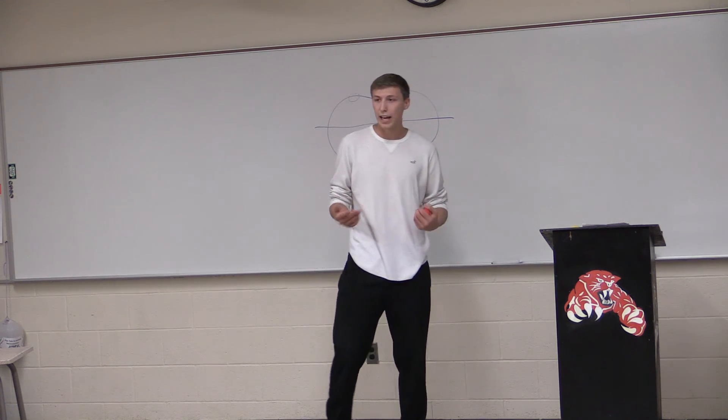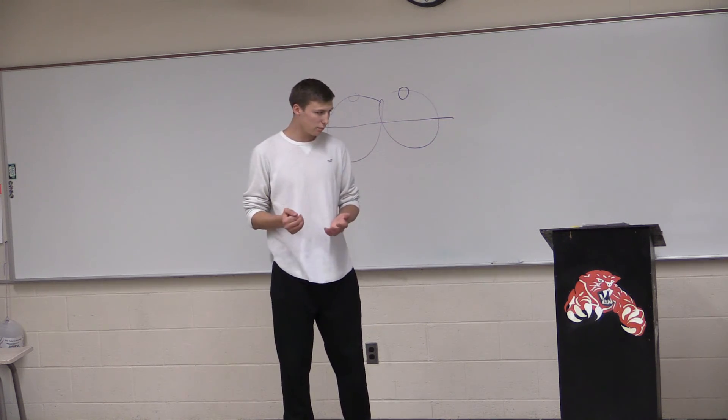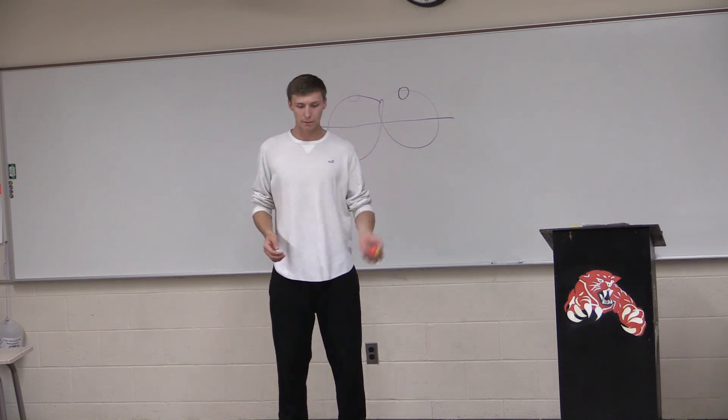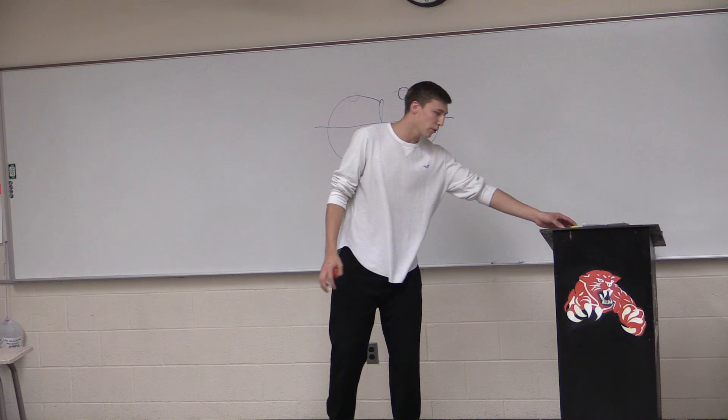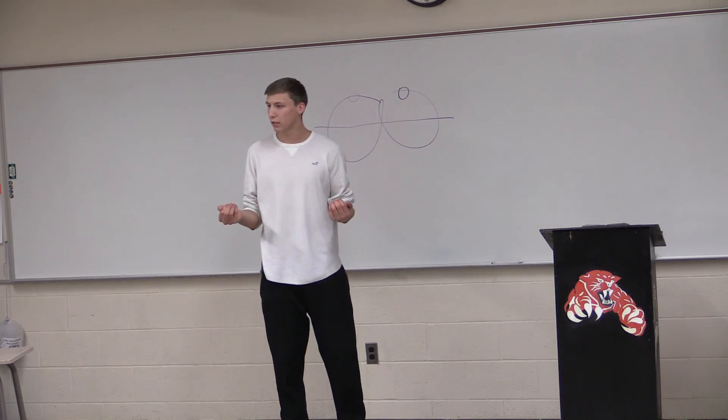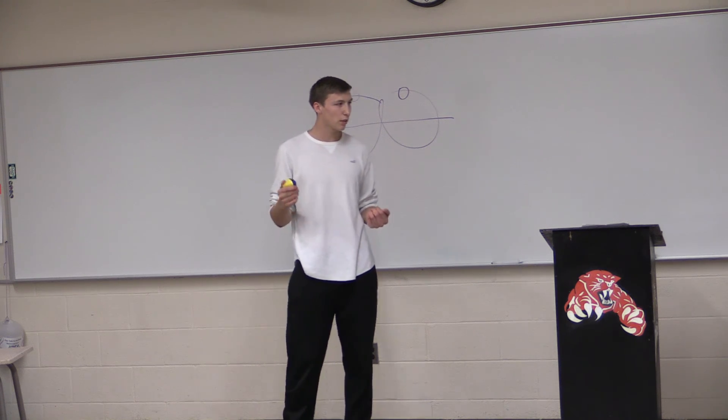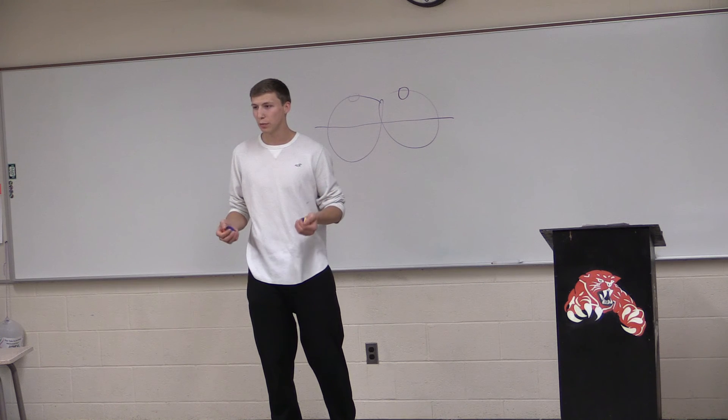Now that you have the proper form, you can actually start juggling. Step three, how to put it all together. You'll start with just one ball, and you'll practice the throwing and catching. And once you have that down, you can start with two balls. You'll hold one in each hand, and throw first with your dominant hand. And once that ball hits its vertex, the point at which the ball stops moving up and begins moving down, you'll throw the opposite ball, like so.